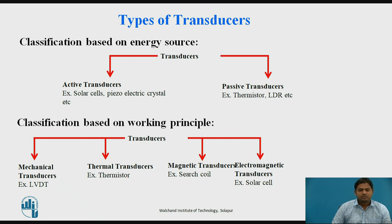The second classification is based on the working principle: magnetic, electromagnetic, thermal, and mechanical. A mechanical transducer uses a mechanical principle to convert energy — for example, the LVDT. A thermal transducer, such as a thermistor, uses temperature to convert into an equivalent electrical quantity. A magnetic transducer, such as pickup coils, uses the magnetic property of materials. An electromagnetic transducer — for example, a solar cell — is also included.